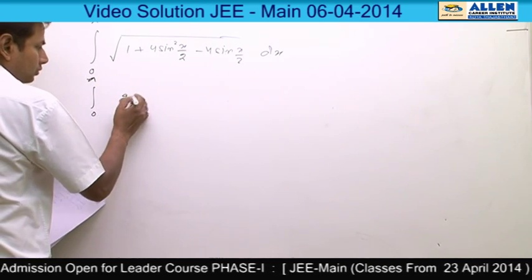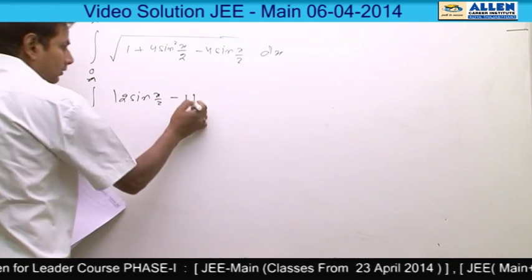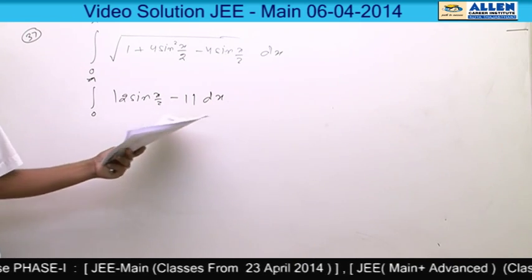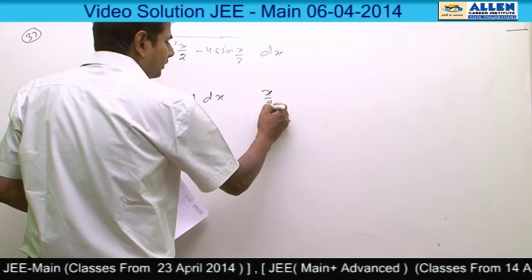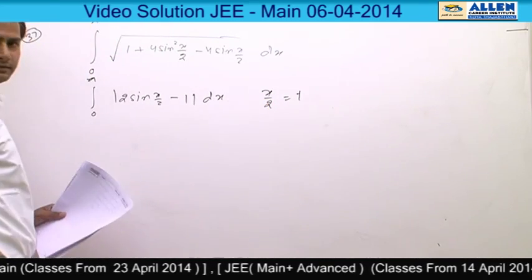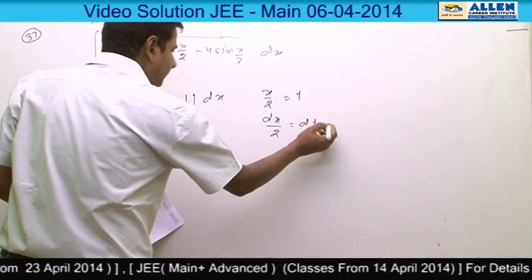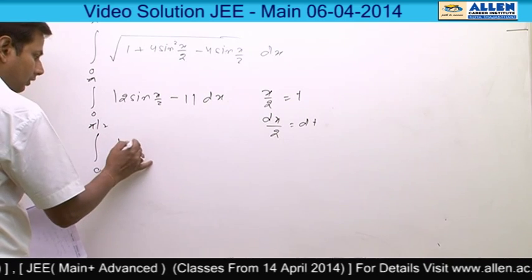Which is 2 sine x by 2 minus 1. Now our new question is integration 0 to pi mod of 2 sine x by 2 minus 1. To simplify this question, first we have to assume x by 2 as t, means dx upon 2 is equal to dt.